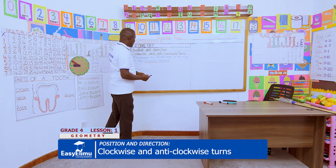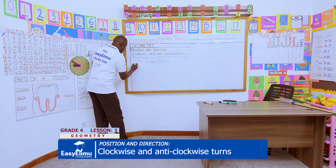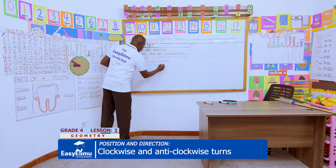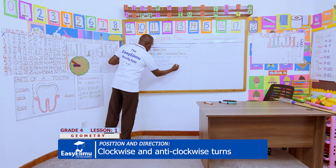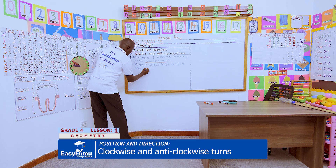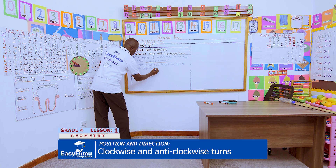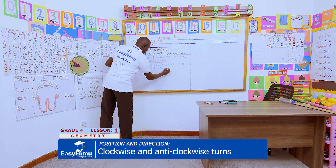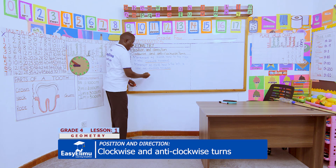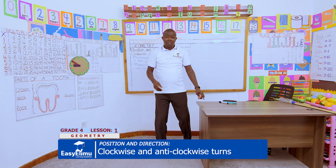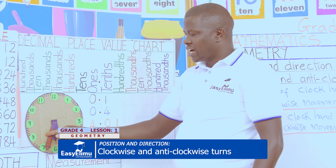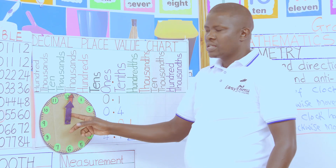So movement to the right is clockwise, and movement to the left is anticlockwise. The movement of the clock hand to the left is called anticlockwise movement or turn — it goes against the way the clock normally goes. Moving the clock hand towards the left is the anticlockwise turn, while movement towards the right is the clockwise turn.